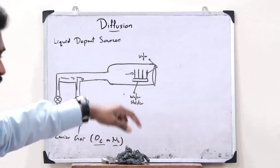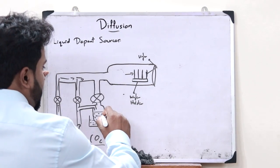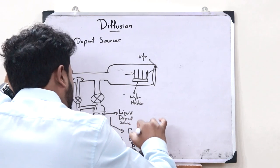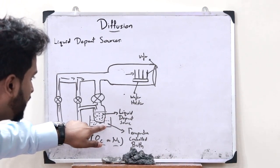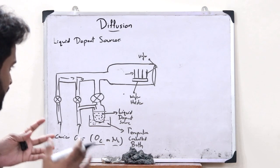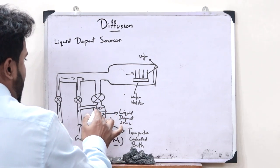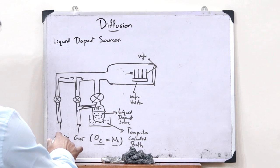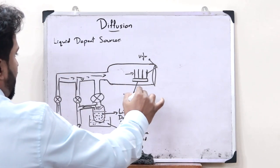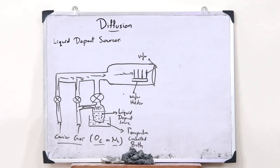Next, let us see the diffusion from the case of liquid dopant sources. The apparatus is somewhat similar, but here we don't have the platinum source boat. Rather, there would be another source — here we would have the liquid dopant source, and this is a temperature-controlled bath. With the help of this particular temperature-controlled bath, we increase the temperature of this particular liquid dopant source. Once that happens, this particular liquid dopant source gets converted into its vaporized form. It goes over here and mixes with the carrier gas, and then gets diffused with the wafer that is present.